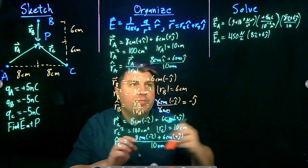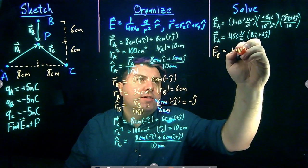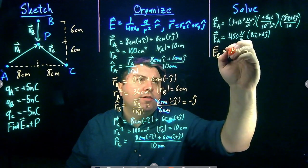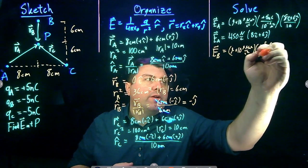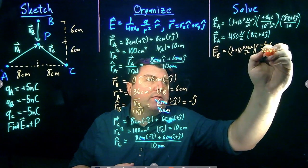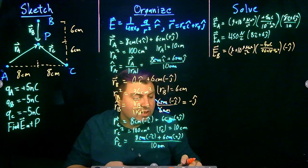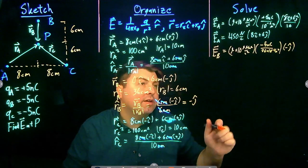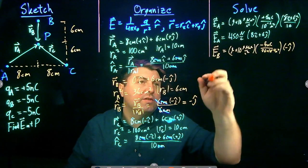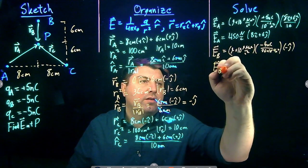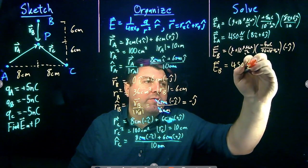Then I find E_B. Still using 9×10⁹ N·m²/C², the charge Q_B is -5 nanocoulombs, R² is 36×10⁻⁴ m², and R̂_B is -ĵ. This gives 450 N/C times (1000/36) times (-1) times (-ĵ). I'll keep the factor of 450 N/C so I can factor it out later.